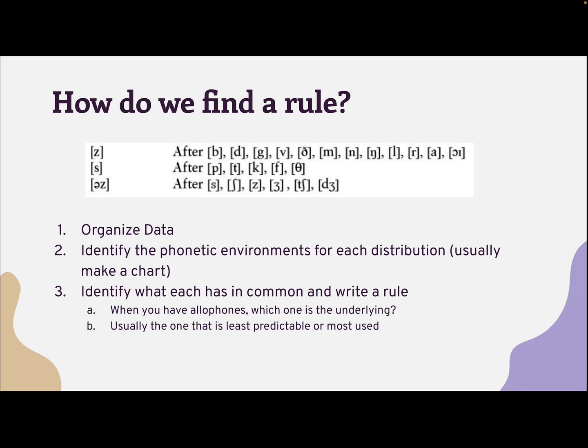What generalizations can we make about what is happening here? You might notice that phones change when next to a certain place or manner or from a certain position in the syllable. Once you've confirmed that yes, this is a predictable pattern, you can use the rule structure from before to define it. This rule would confirm that an alternation is taking place and support that these phones are allophones, that we stored these sounds together mentally.